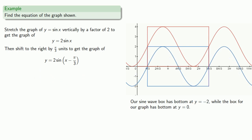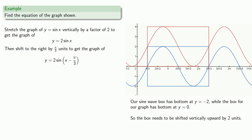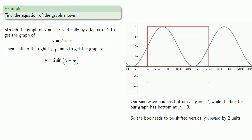The vertical stretch has made our sine wave box have bottom at y equals negative 2, while the box for our graph has bottom at y equals 0, so the box needs to be shifted vertically upward 2 units. What happens to the box also happens to our graph, so we shift the graph vertically upward by 2 units to get y equals 2 sine of x minus pi thirds plus 2.